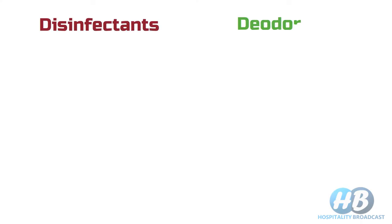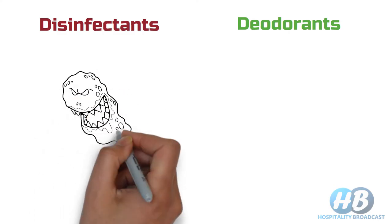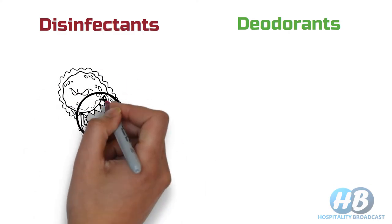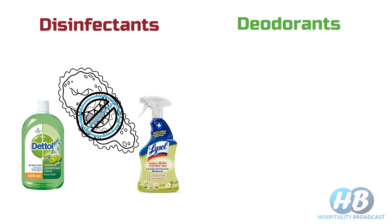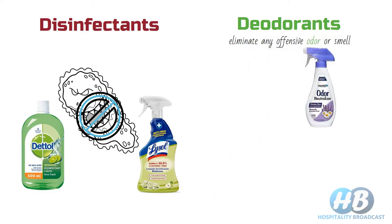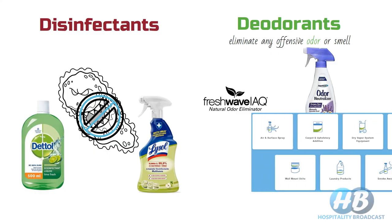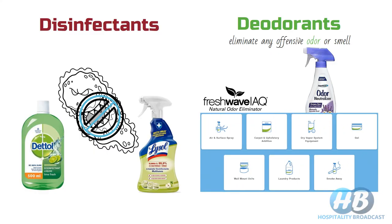Next we have disinfectants and deodorants. These are strictly not cleaning agents but are often used during cleaning operations. Disinfectants are used to kill microbes or bacteria and help in germ control — for example, Lysol and Dettol. On the other hand, deodorants or deodorizers are used to eliminate any offensive odor or smell. They provide many solutions for hotels such as room spray, air freshener, carpet additives, dry vapour systems, gel, wall-mounted units, etc.